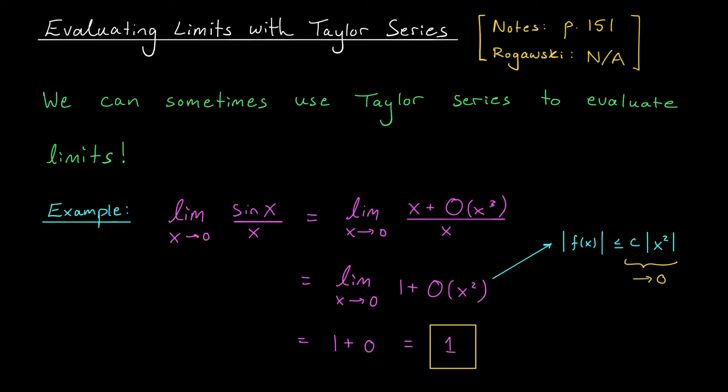Pretty cool, huh? Now, I know this was kind of a baby example, but I think it does a good job of illustrating how we're going to approach these types of problems. We're going to write out the Maclaurin series for the functions in our limit, making appropriate use of big O notation. Hopefully then we'll get some cancellation, and we'll end up with a limit we can actually evaluate. Let me show you a couple more examples.